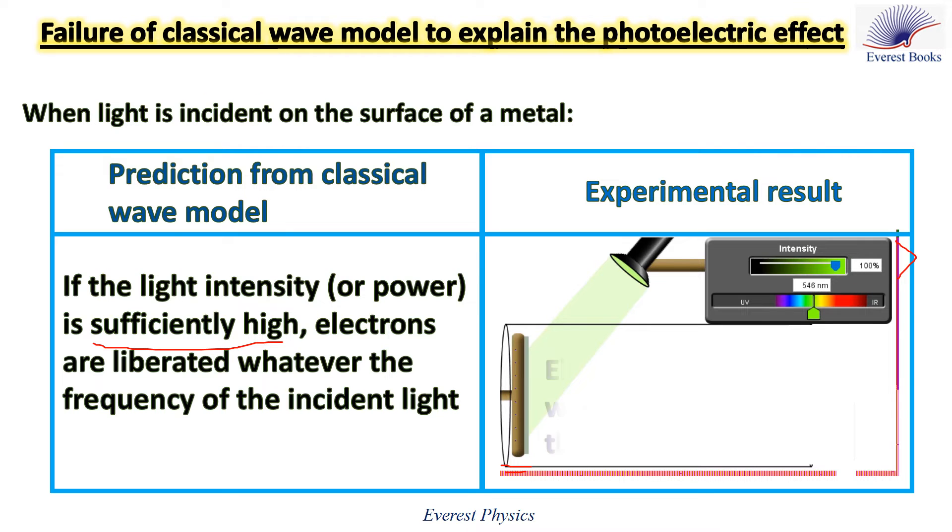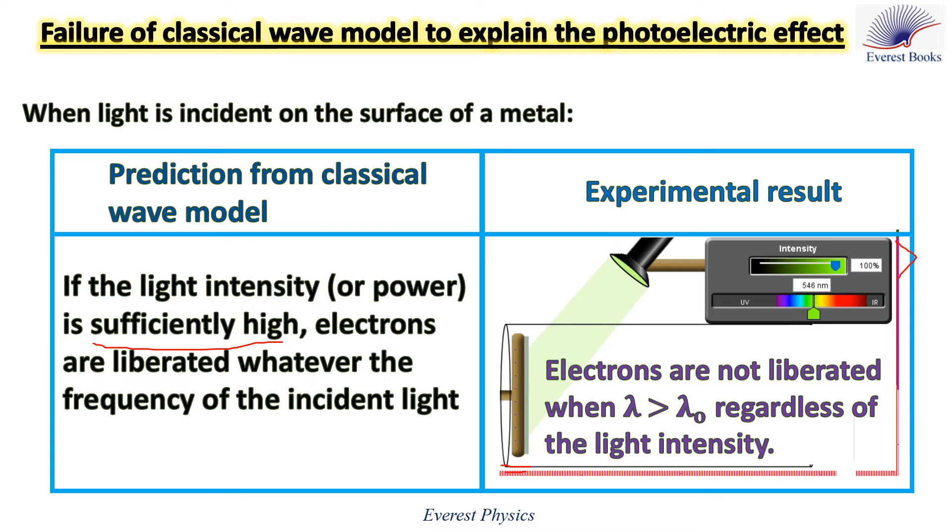But why? Electrons are not liberated when the wavelength of the incident light is greater than the threshold wavelength of this metal, regardless of the light intensity.